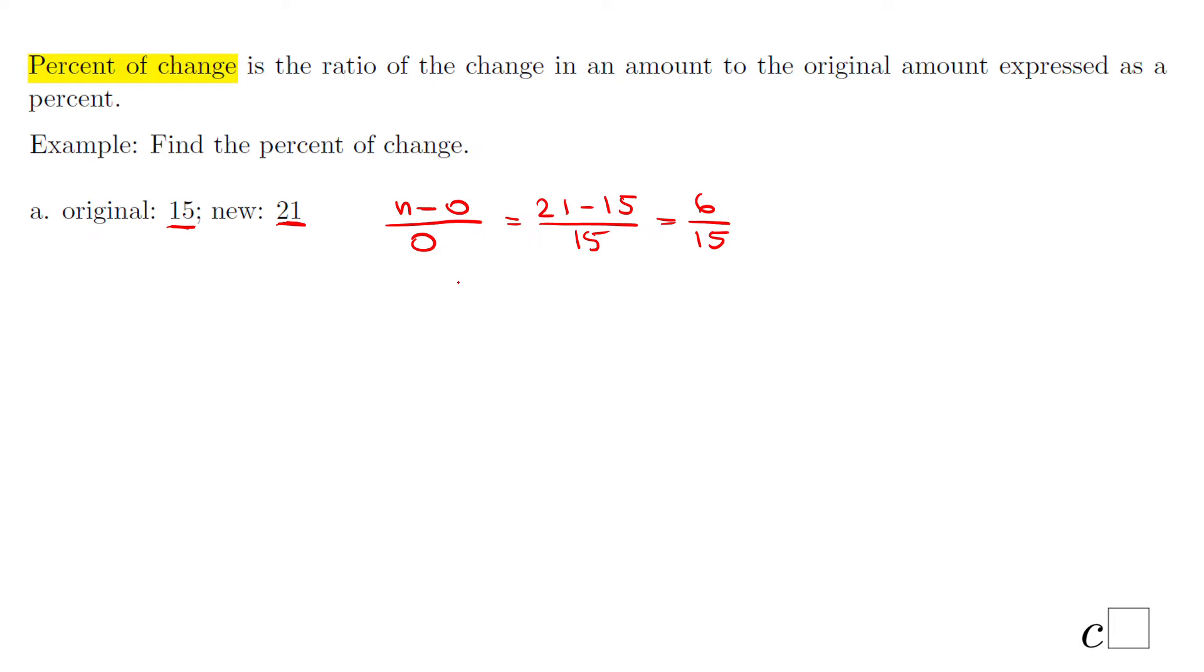In this case we have 21 minus 15 over 15, which means nothing else than 6 over 15. If you want to find the percent of change, you have two choices. You can do 6 over 15 equals r over 100 and do a cross multiplication to find r. Or another way will be to simply do 6 divided by 15, which is 0.4. Move the decimal point twice to the right and that will be 40 percent.